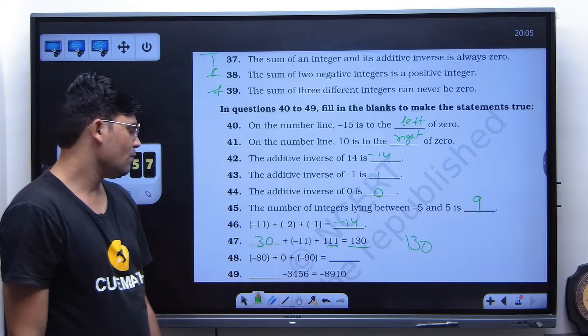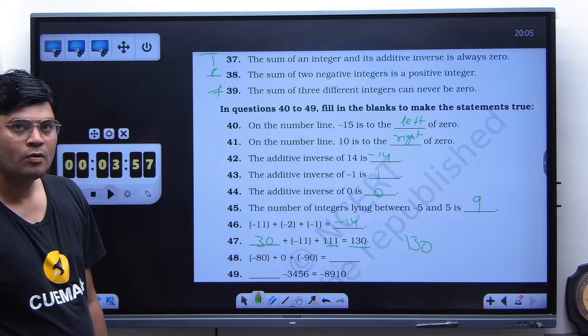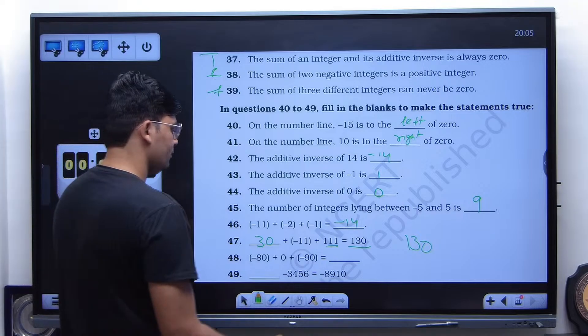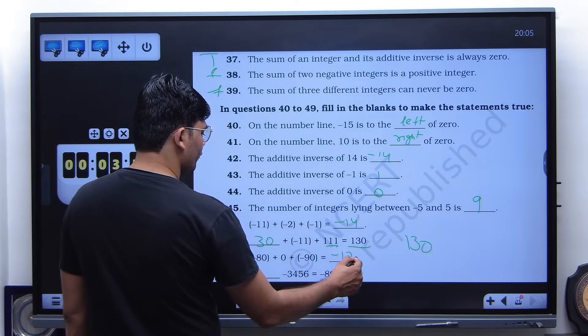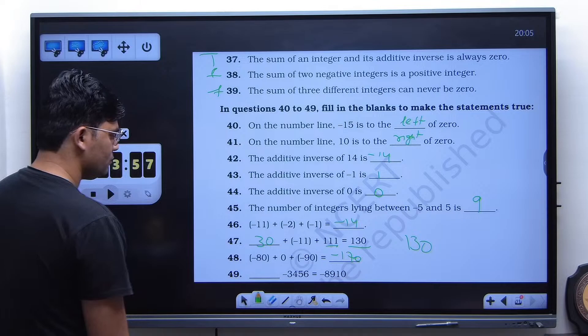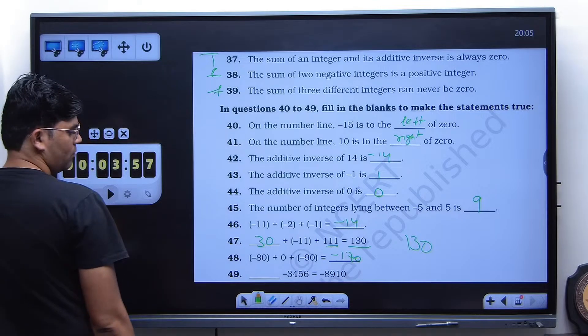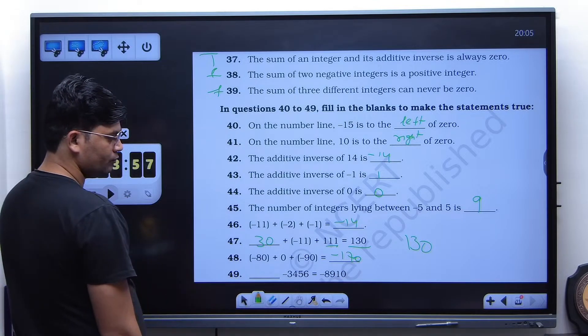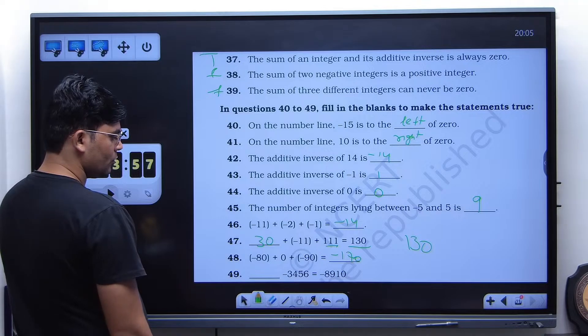What about the next one? Minus 170. Very good. And then the last one, I think it is 4,464.